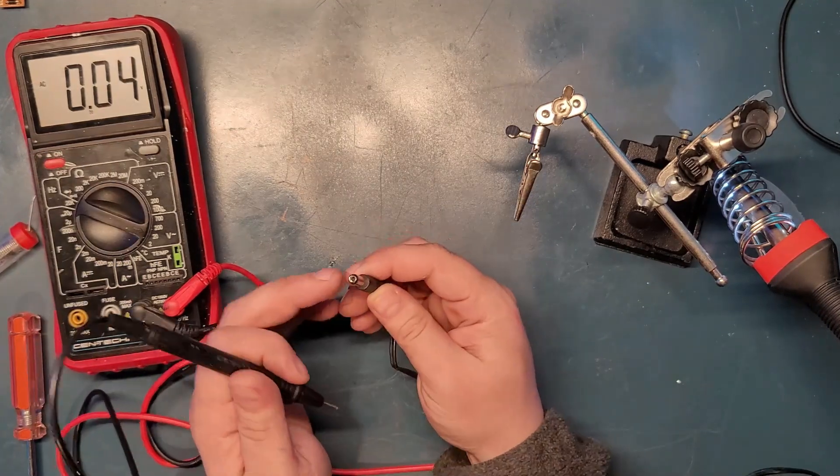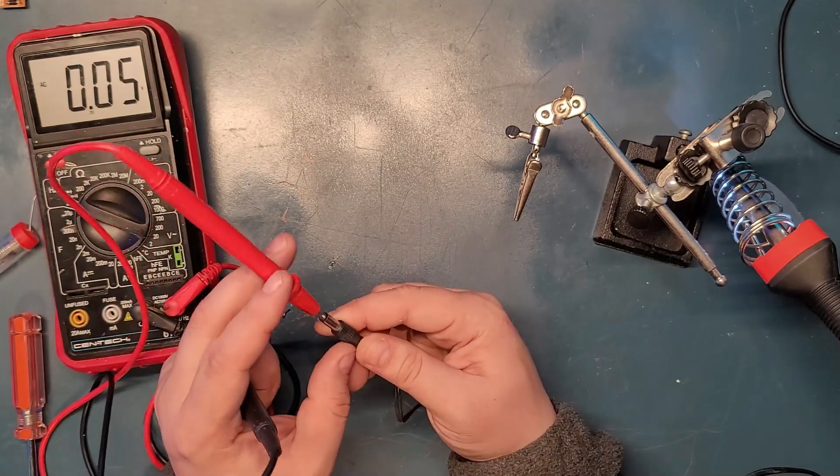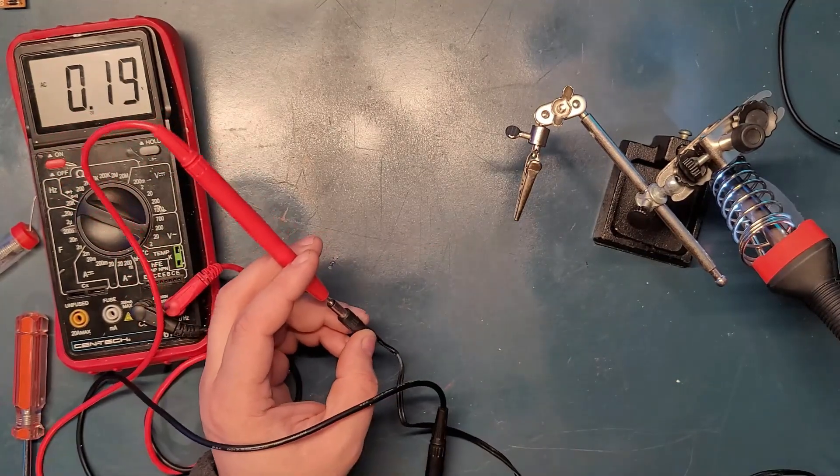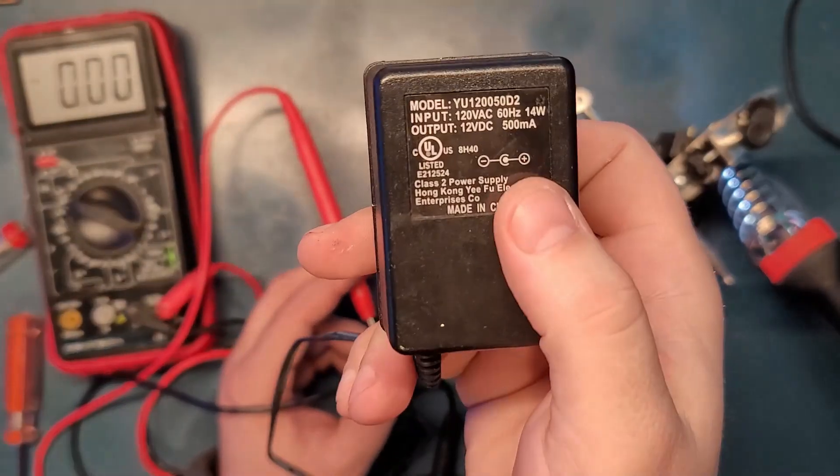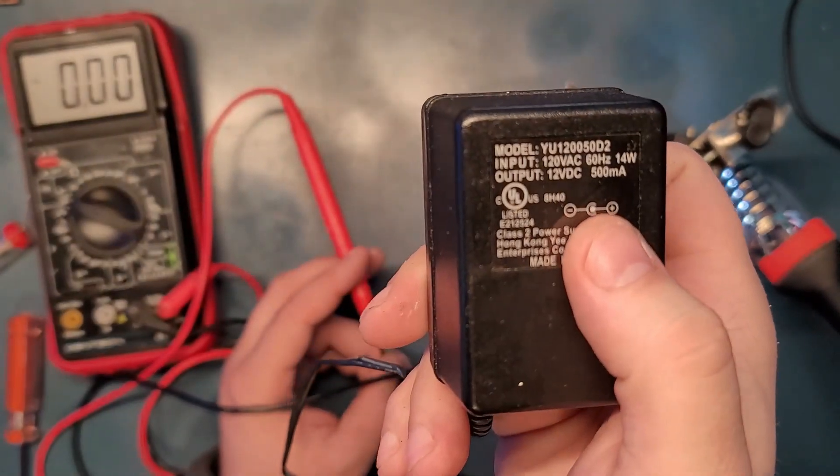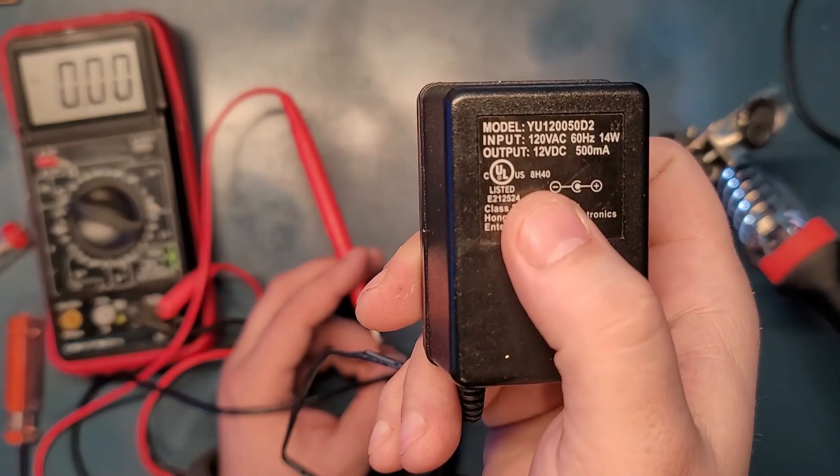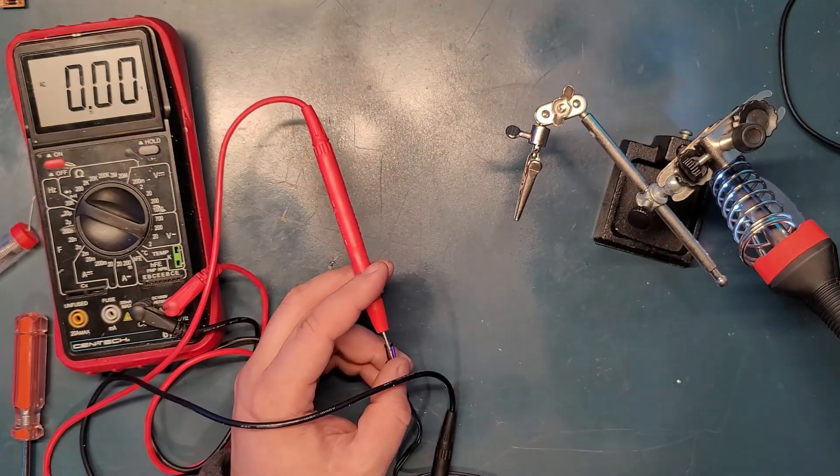Usually I assume the middle pin is positive and the outer pin negative, but not always. We have to see on the bottom of the casing right here, you'll see this little diagram that says the middle pin is positive, the outer pin is negative. So yeah, I was correct on my assumption.